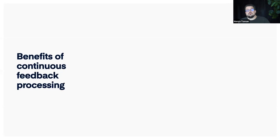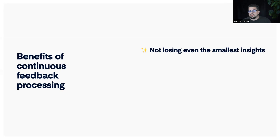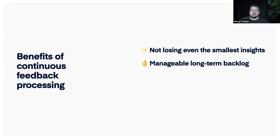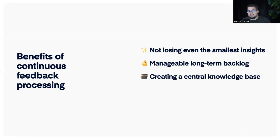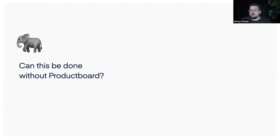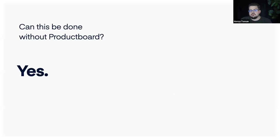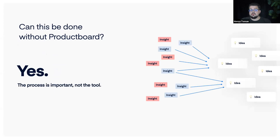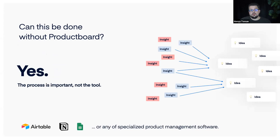So what are the benefits of continuous feedback processing? The biggest one: we're not losing even the smallest insights. Our long-term backlog is more manageable because it's well structured with feedback connected, helping prioritization. We're creating a central knowledge base — not everything lives in the heads of the first people who started the design system, but is available to every team member. And of course, easier prioritization. Can this process be done without Productboard as a tool? Yes, absolutely. What's important is the process, not the tool. Other tools like Notion, Airtable, Google Sheets, or other product management software can be adjusted for this process.